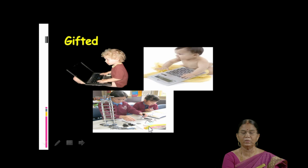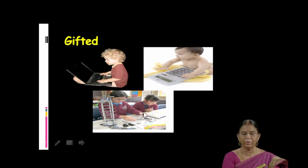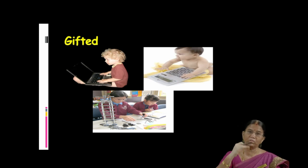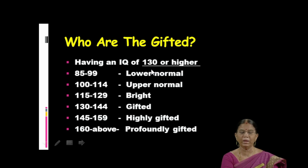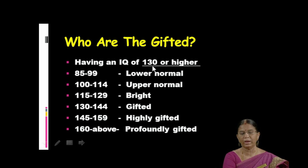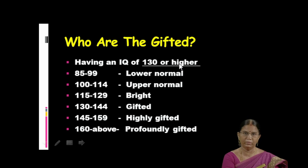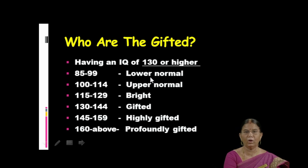The other children at the extreme condition are gifted children. One to two percent of the population may have this type of child. As soon as they are born they might be extraordinary kids. IQ means intelligent quotient. The normal IQ of a person is 90 to 110. When the child has an IQ of 130 or higher, they are called gifted. So having an IQ of 130 and above — only those are called gifted children.